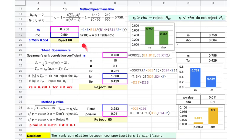All three methods gave the same result: reject H0. Now we can conclude the decision. The rank correlation between two sport writers is significant.